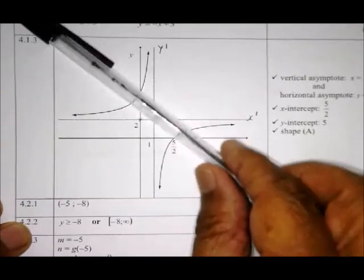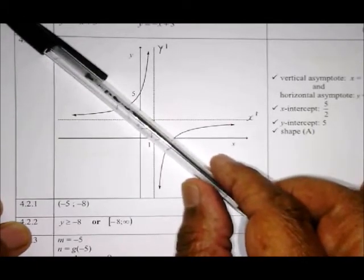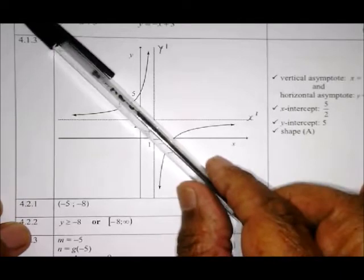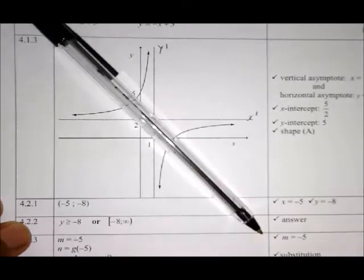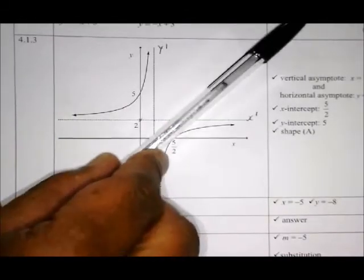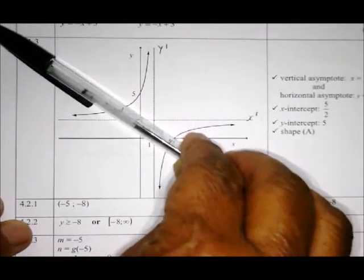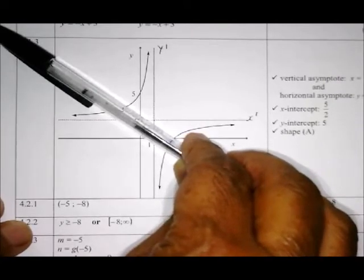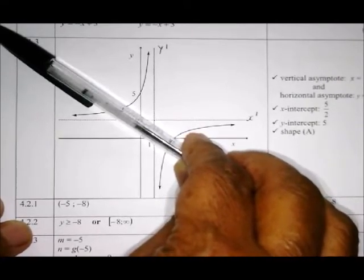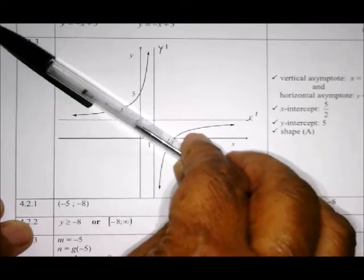To find all the intersections with the axes, remember the asymptotes are the dotted lines. The graph is in the fourth quadrant and must not touch the dotted lines because the function cannot equal the asymptote values.